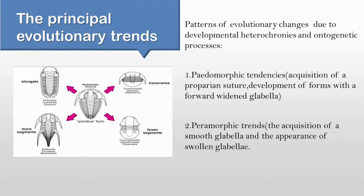Depending on their early to adult life, evolutionary trends can be divided into pediomorphic tendencies and paramorphic trends. Due to changes in their cephalon, eye size, and segments of the thorax, we can differentiate them, and this is how the evolutionary trend follows on.